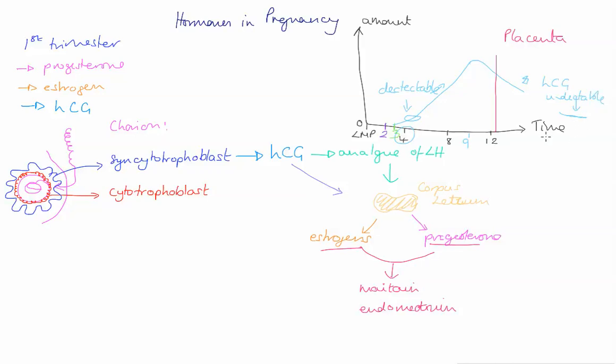And so you can't use a pregnancy test then to tell if a woman's pregnant in the latter part of her pregnancy. The other interesting use of HCG is as an analogue of luteinizing hormone because luteinizing hormone is a key contributor to the fertility of both men and women.